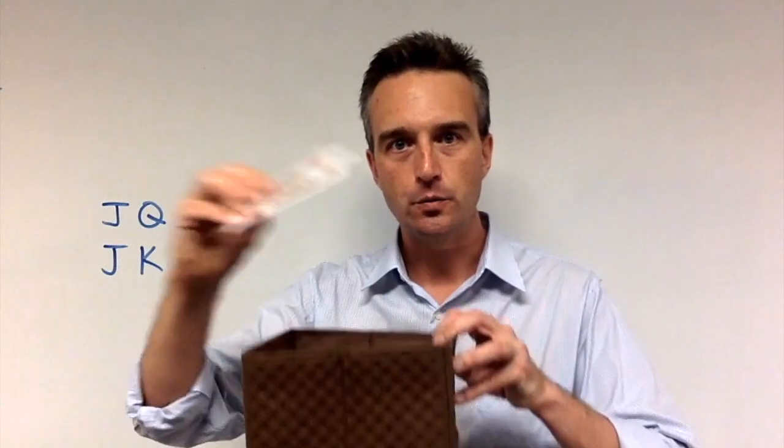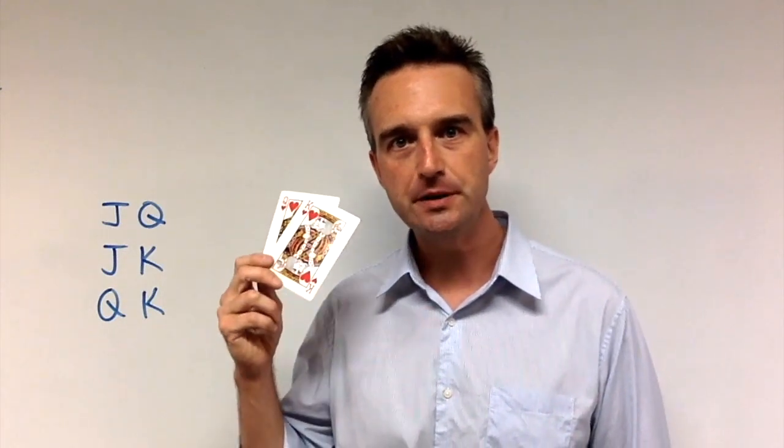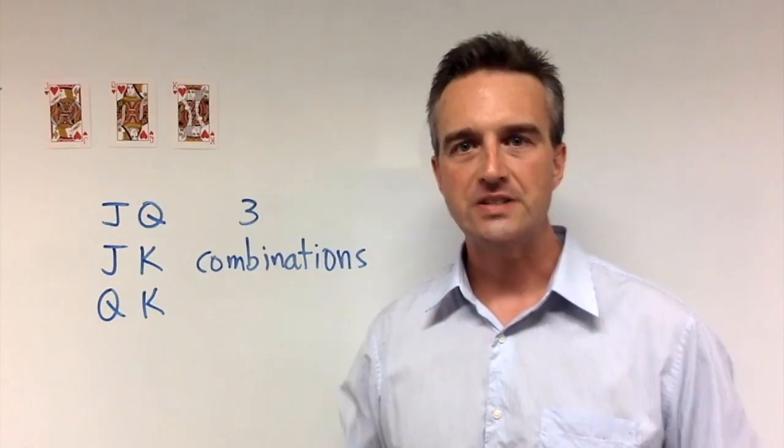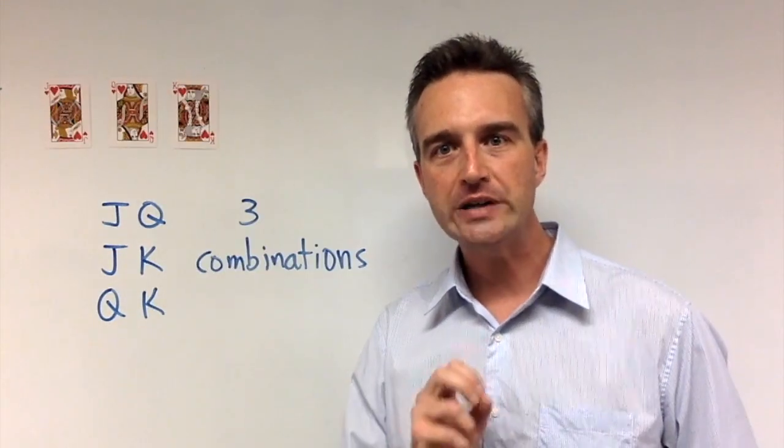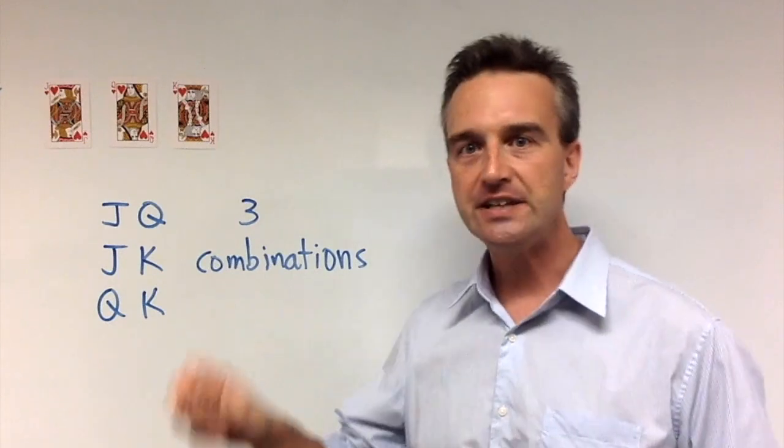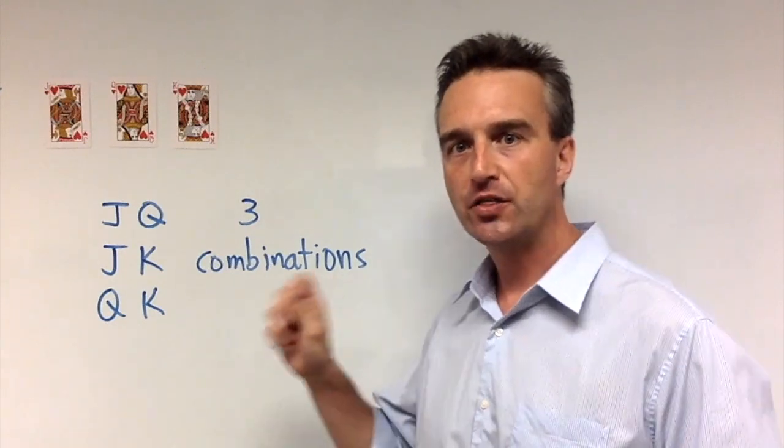Another combination would be jack and king. Again, we do not order them in any way. We just hold them as a group. There is another combination. And the third and final two card combination of these three cards would simply be queen and king. And again, order is not important. They're simply placed as a group. So in total, the number of two card combinations there are for these three cards would simply be three combinations.